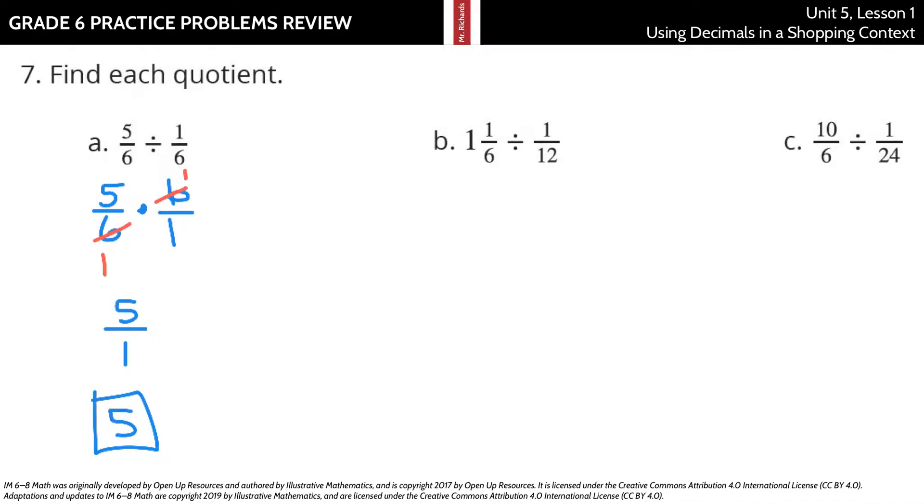Before we keep change flip we need to get this as 7/6 divided by 1/12 and then we can keep, change, flip and then simplify, divide by 6 you get 1 and 2 until 7 times 2 is 14, 1 times 1 is 1, so our solution is 14.